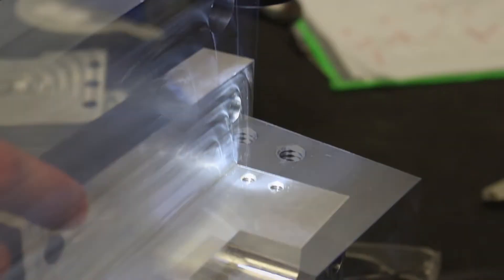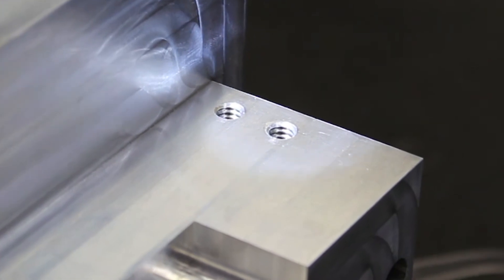In this case we are looking at a blind quarter 20 thread and a drill depth of 0.65 inches.